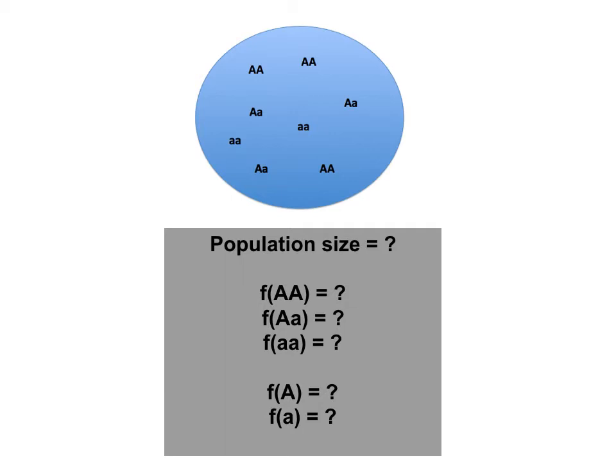The same applies to allele frequencies. We count all big A alleles: nine. Nine divided by 16 is 56.25%, which is the allele frequency of big A. Counting little a alleles gives seven; seven divided by 16 is 43.75%, which is the allele frequency of little a. Add those two together and you get 100%, or one.